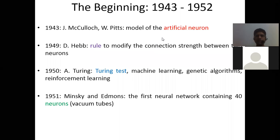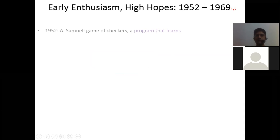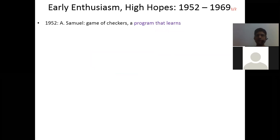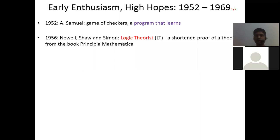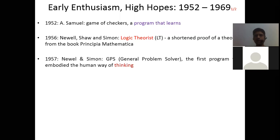In 1951, Minsky proposed the first neural network containing 40 neurons. After that in 1952 we have a game of checkers — a program that learns. In 1956 a logic theorist was proposed; it was a shortened proof of a theorem from the book Principia Mathematica. In 1957 we have GPS — the General Problem Solver — the first program that embodied the human way of thinking.